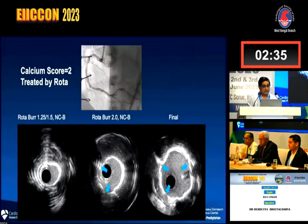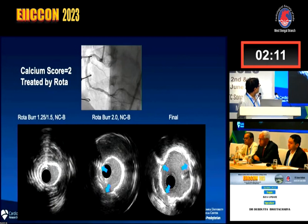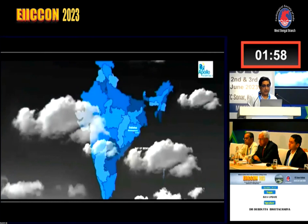This is an example of a patient with a calcific lesion. Two sizes of rotablator burr were used — 1.25, then 1.5 with a non-compliant balloon, then a 2.0 burr. After the rotablator, some calcium has been scraped off — you can now see reverberations — but the lumen was not large enough, so a 2 mm burr was used. The final result shows the stent is well expanded.